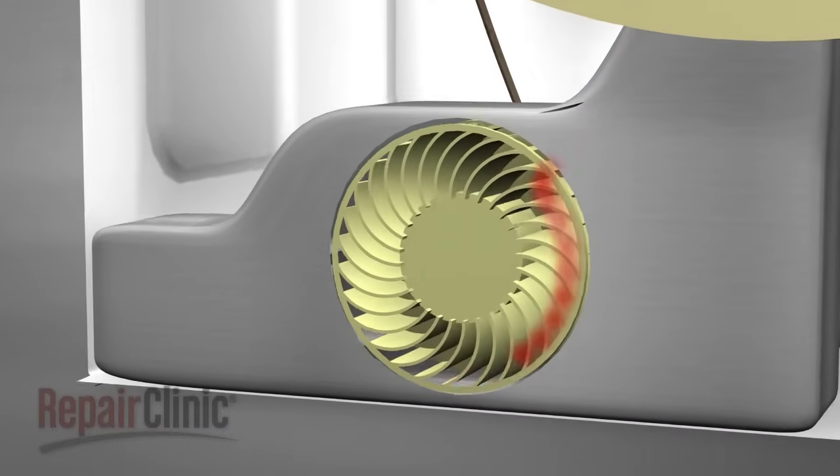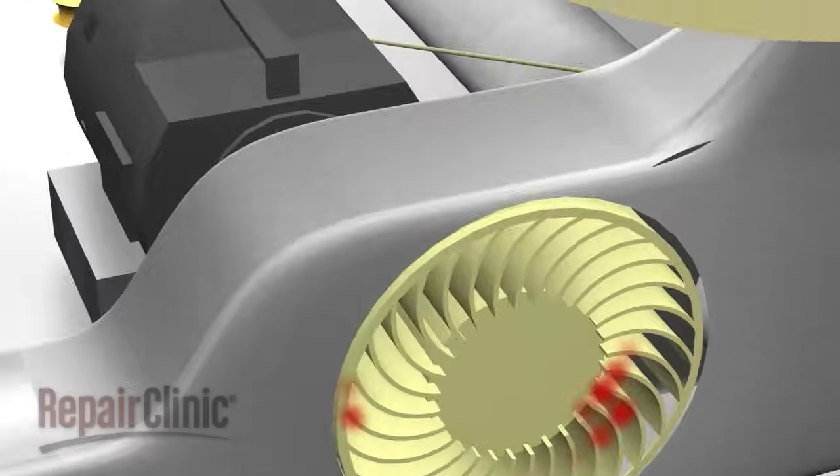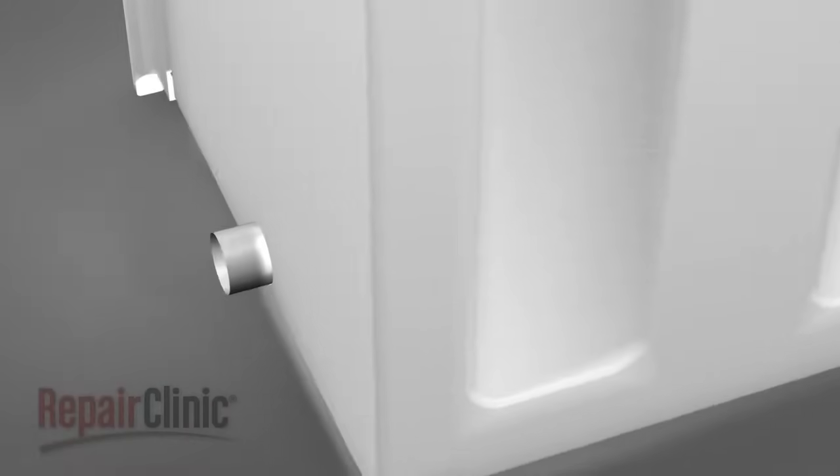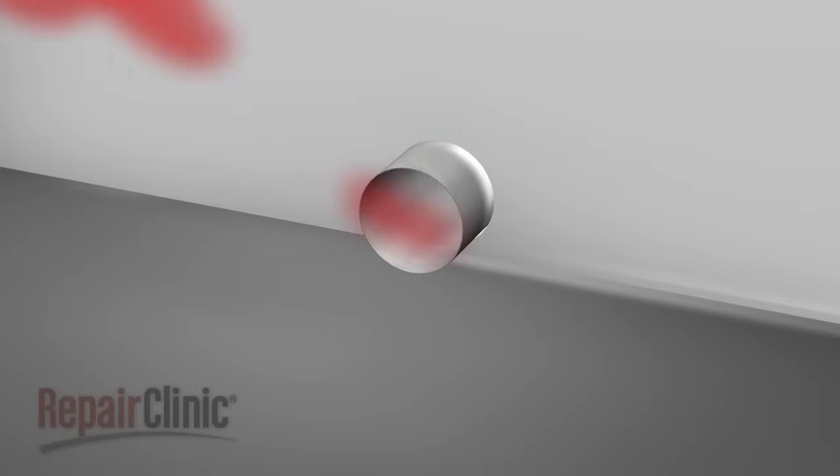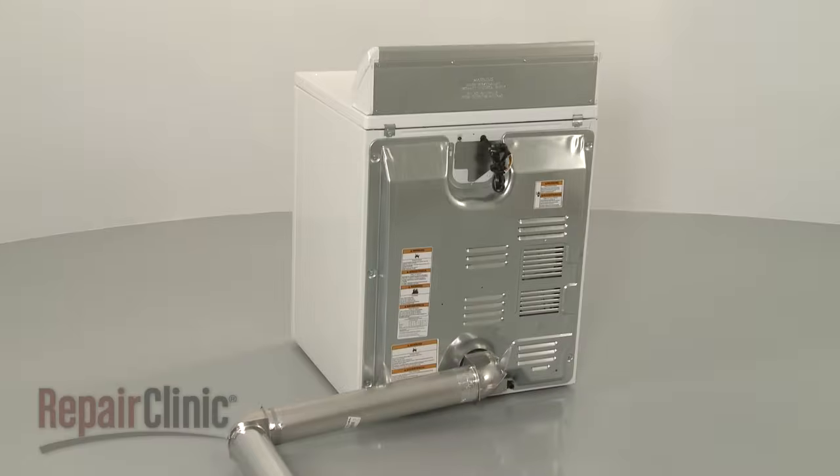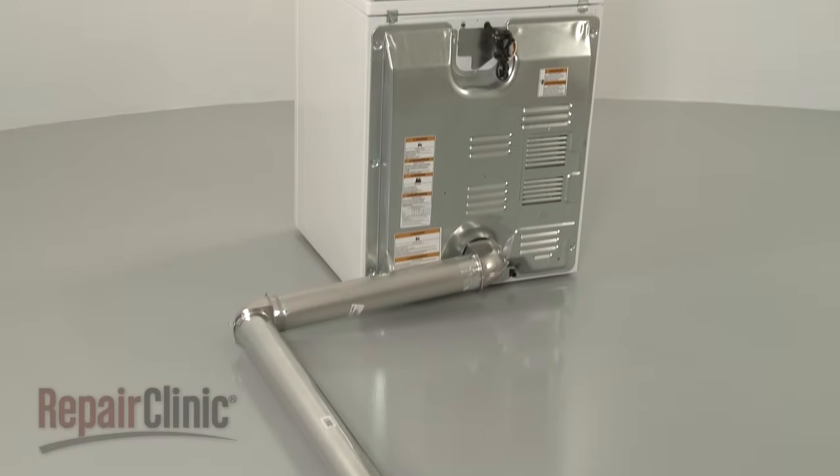The last stage of air flow is the exhaust stage. The heated air that has removed the moisture from the clothes must be vented to the outside of the home. An exhaust vent is used for this purpose.